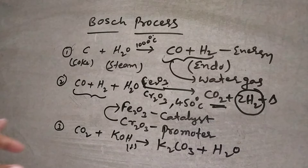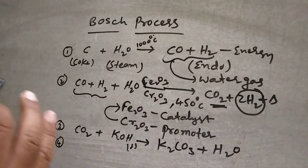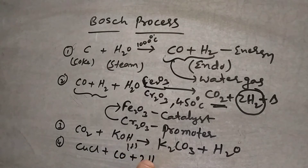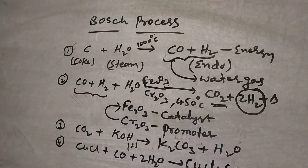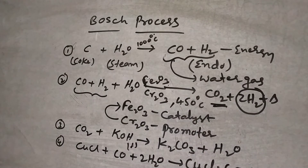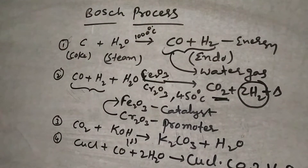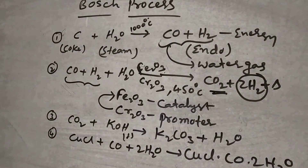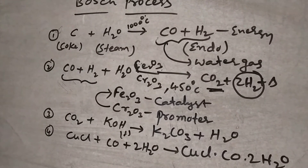To eliminate carbon monoxide, you have to pass it through ammoniacal cuprous chloride solution. The carbon monoxide forms an addition product with CuCl. This addition product is formed, separating the carbon monoxide from the mixture.